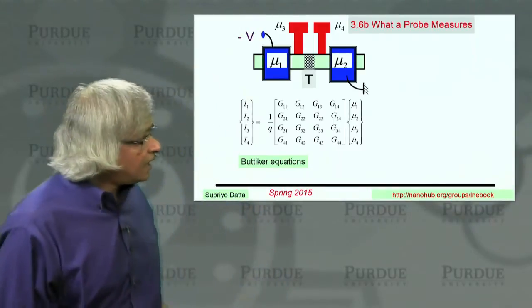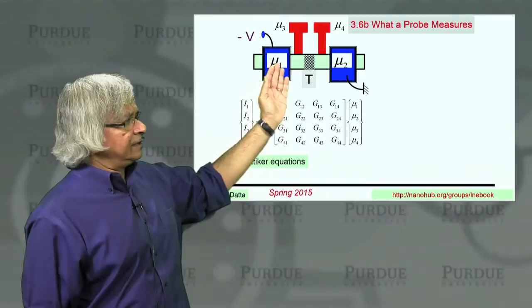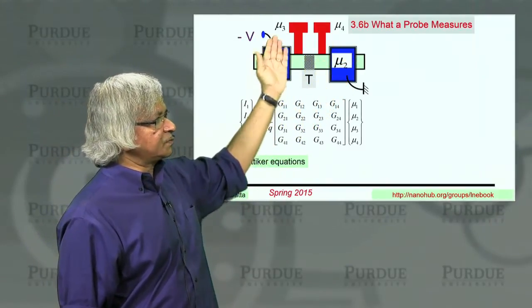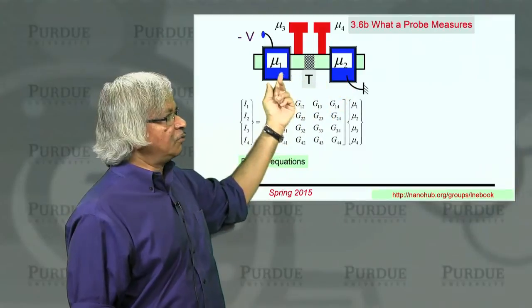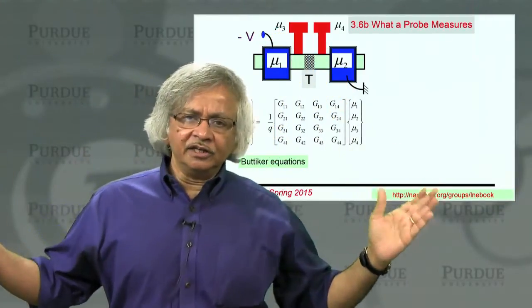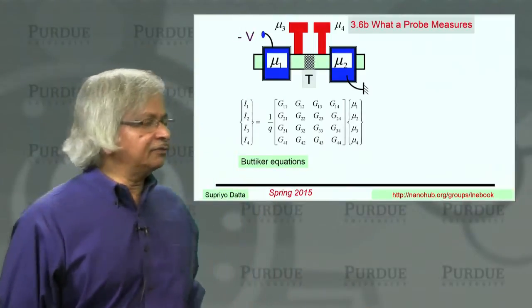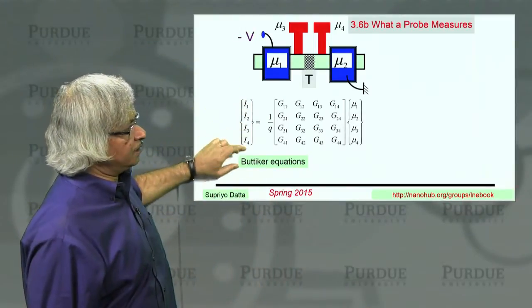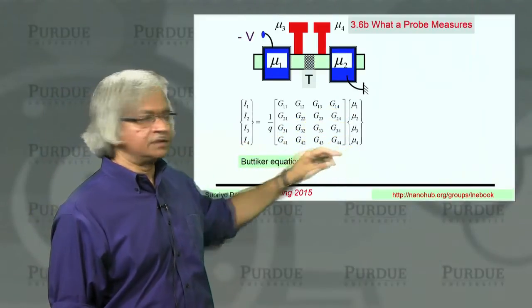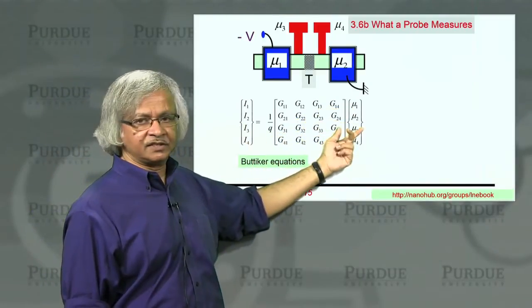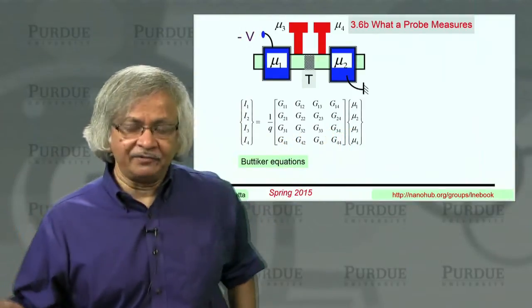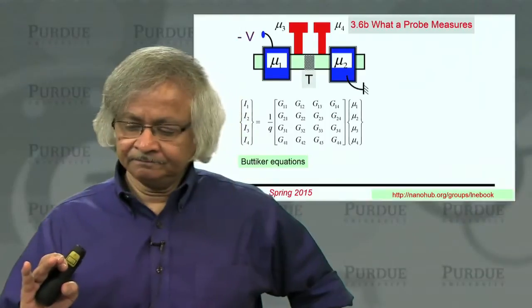Now, in terms of interpreting experiments of that type, these Boutiker equations proved to be very successful. This is what Boutiker suggested back in 1986, I believe. And what he said is that when you have these four probes, mu 1, mu 2, mu 3, mu 4, treat them all on an equal footing and write down the current at the four terminals in terms of the potentials at the four terminals. So you've got four things here, four things here. So you've got this conductance matrix, a four-by-four matrix that connects them.